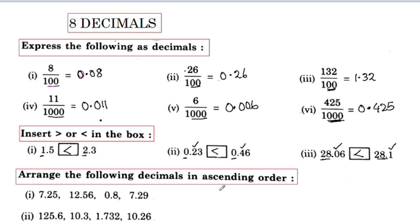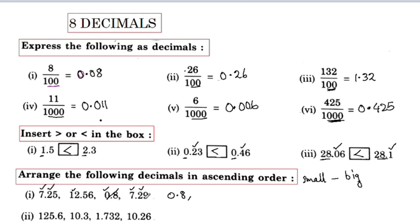Arrange the following decimals in ascending order. Ascending order is small to big. Ascending order is 72007. Ascending order is 0.8. We are doing decimal point here. Ascending order is 2, ascending order is 5. Now 9 is greater than 5, ascending order is 5.